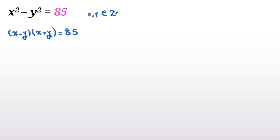Because we only have x squared and y squared, without loss of generality we consider x and y greater than or equal to 0. So x plus y is positive — it cannot be 0 (the product would be 0, not 85), and it cannot be negative since x and y are non-negative. Therefore x minus y must also be positive, since both factors must be positive for the product to be 85. At the end we will consider negative signs — for example, if we reach x equals 2 we consider plus or minus 2.